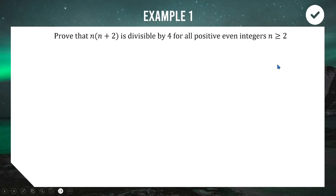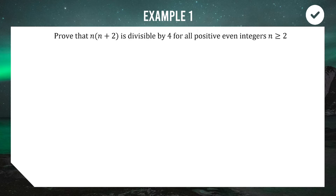For the first example, we have an expression n times (n+2), and we're trying to prove that this is divisible by four whenever n is a positive even integer — starting with 2, 4, 6, 8, etc. It's a different style of question to last week. Unlike those examples where we started with n equals one, this time because we're only looking at even numbers, we start with n equals two.